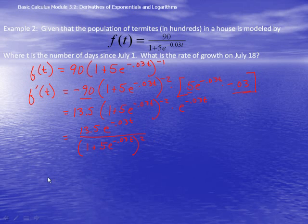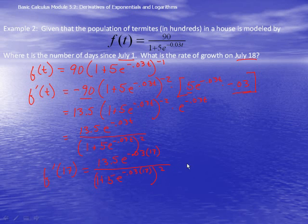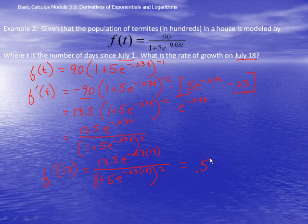July 18th is day 17 since July 1st, so we evaluate f prime at t equals 17: 13.5 e to the negative 0.03 times 17, over 1 plus 5e to the negative 0.03 times 17, quantity squared. Using a calculator, the answer is approximately 0.5. Since the population is in hundreds, 0.5 represents 50 termites per day on July 18th.